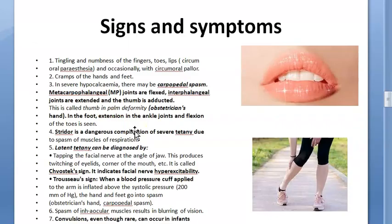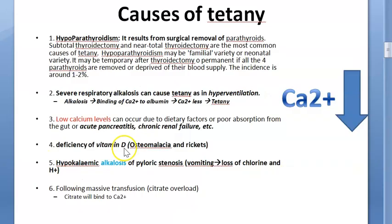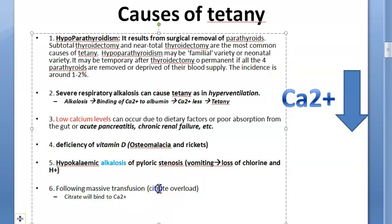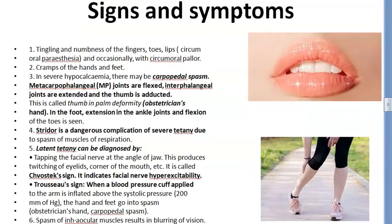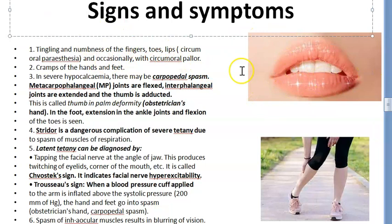Now let us look at signs and symptoms. A key symptom is circumoral paresthesia — abnormal sensation (pins and needles) around the lips. It can also occur in the fingers and toes. So paresthesia around the lips, fingers, and toes is a sign of tetany.